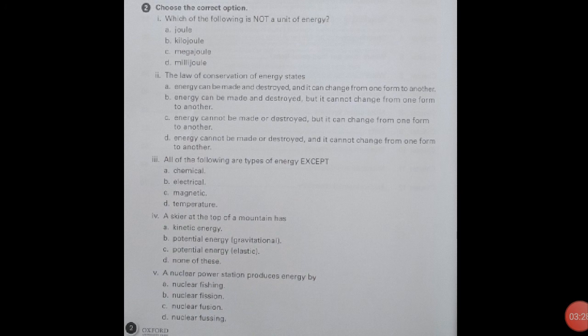All of the following are types of energy except temperature. So in option three, it is D. Number fourth: A square at the top of a mountain has potential energy. You know that as we go higher from earth, potential energy increases with height. So number fourth, option B is correct.